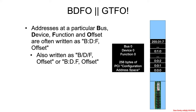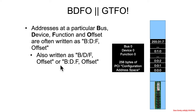When it comes to addressing a particular area of the PCI configuration address space, we're going to use a term called BDFO. That stands for bus, device, function, and offset within the configuration address space. You'll often see this written as B:D:F with a comma and an offset, but also as B/D/F comma offset, or B:D.F offset — the latter more commonly used on Unix-type systems.